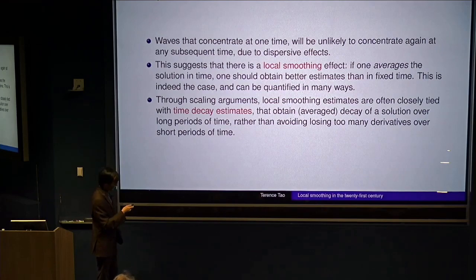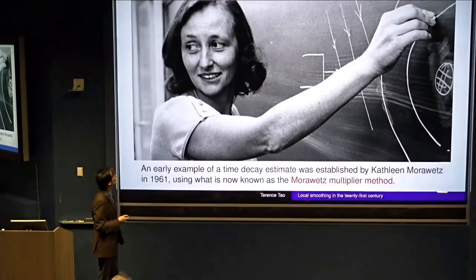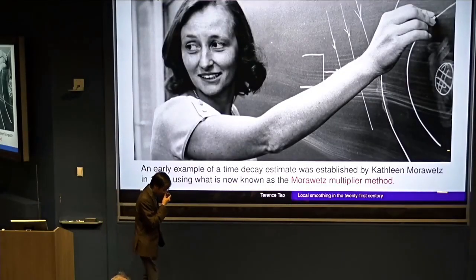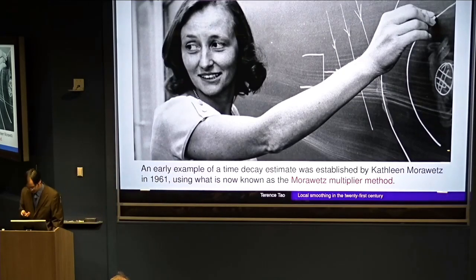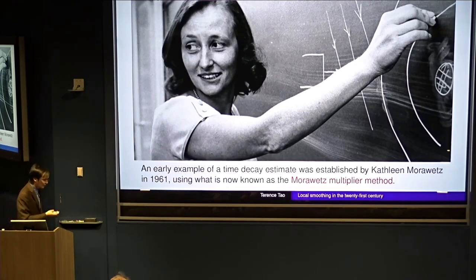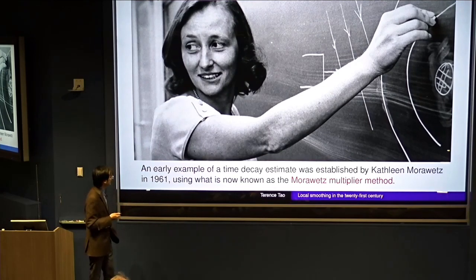So to summarize hundreds of years of wave equations, people have basically been proving lots of local smoothing and time decay estimates. I will not survey all of them. I mention one that I quite like, which is one of the first ones. It's the Morawetz estimate first introduced. There's a whole family of Morawetz estimates, but it was introduced by Cathleen Morawetz back in the 60s using what we now call the Morawetz multiplier method.